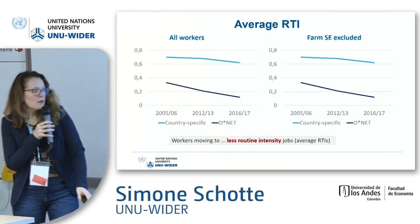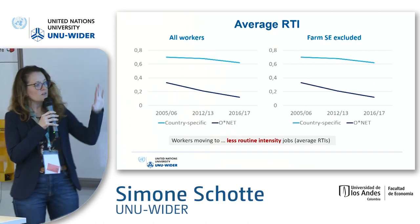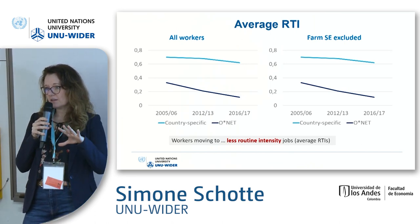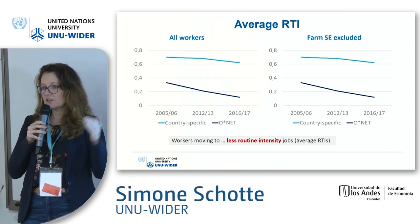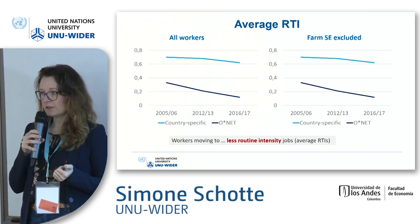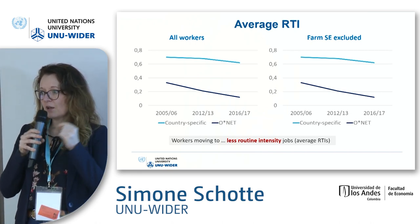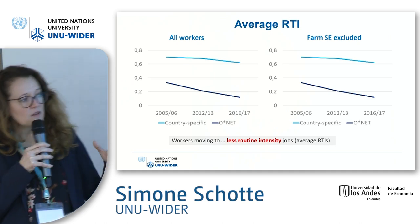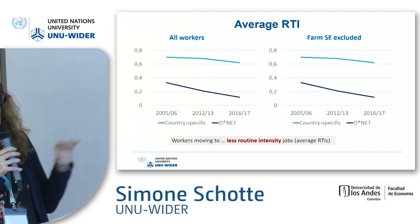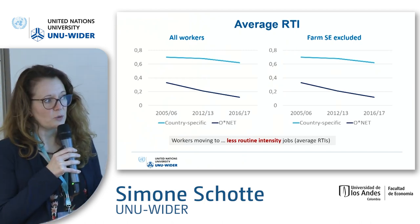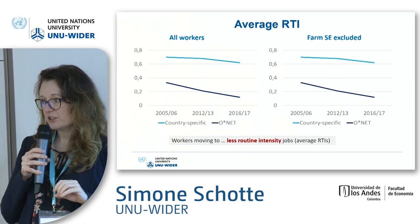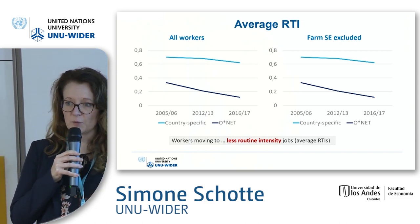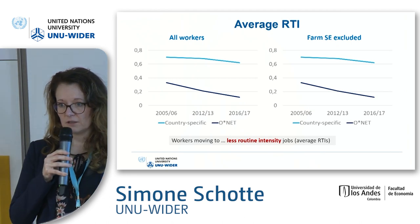Looking at the patterns: for each occupation at the two-digit level, we assign RTI values and examine how the shifts in occupations have changed the average routine task intensity in the country. For either group — all workers or excluding agricultural workers — we see a strong drop in RTI: a kind of de-routinization, with workers moving out of more routine types of occupations into less routine ones.